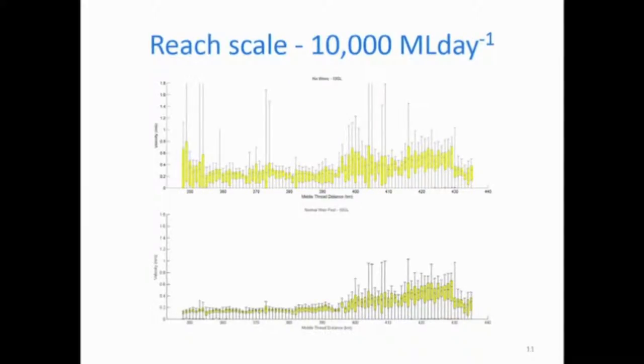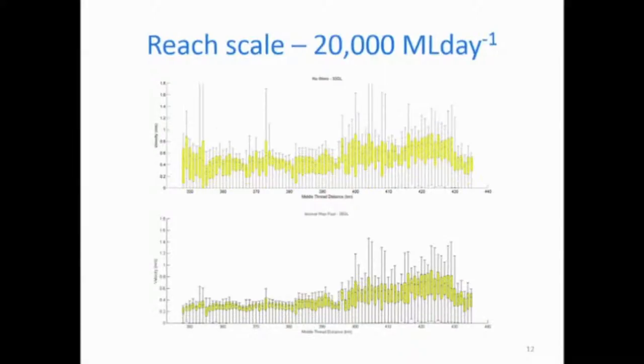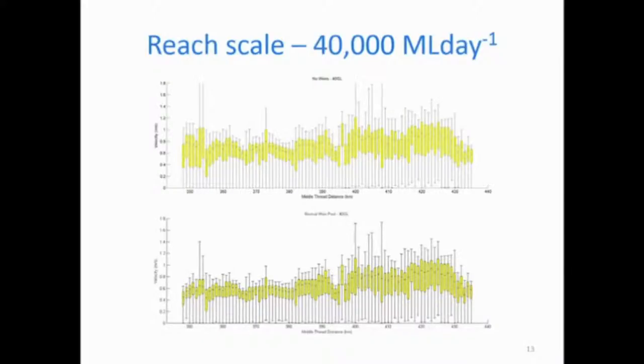If you increase the flow to 10,000 megalitres a day, the no weir scenario looks very much the same except that the velocity has gone up a bit. The flow with the weirs in place, again, the top end looks similar to before regulation, but that creeps further down the river as the flow increases. As we go to 20,000 megalitres a day, you can see that the high hydraulic diversity has increased along the whole river, but more so at the upstream end. By the time we get to 40,000 megalitres a day, the two look very similar. But as the chief was saying before, most of the flows are more like 10,000 megalitres a day. You don't really get that many 40,000s.